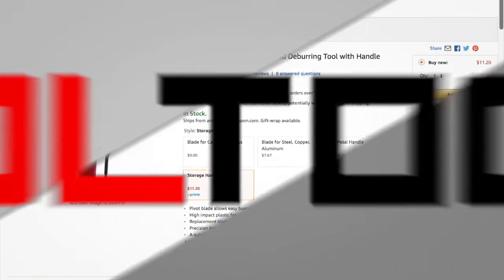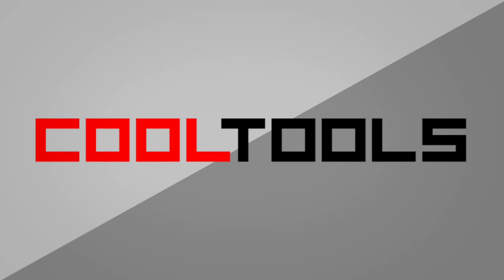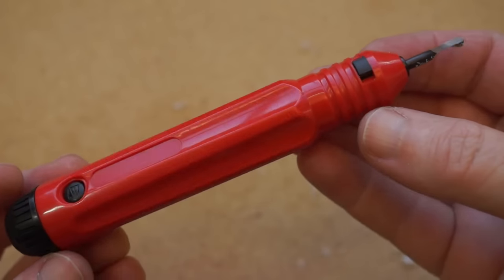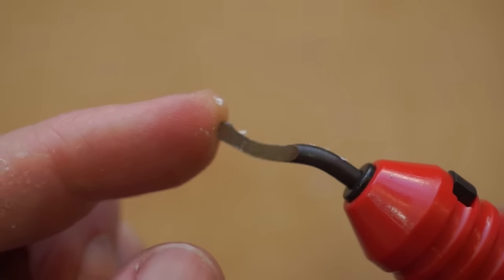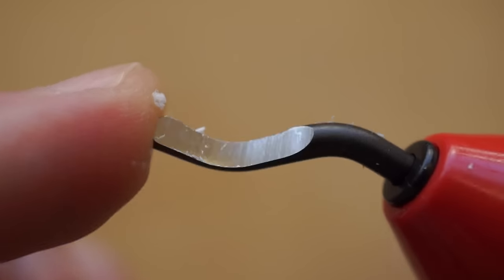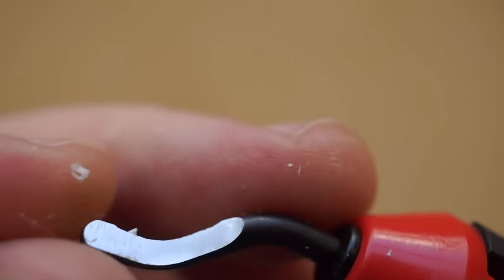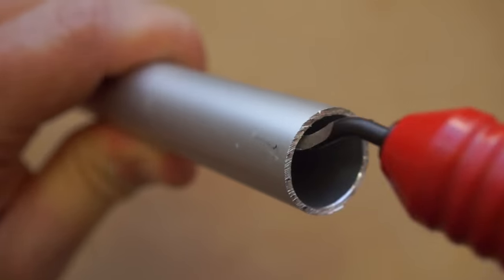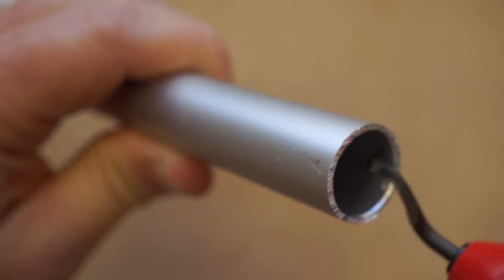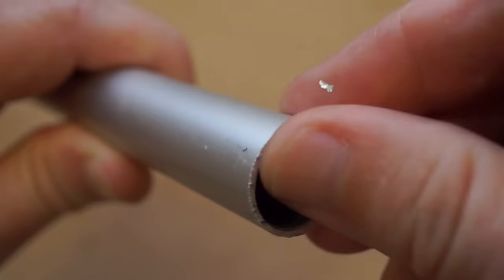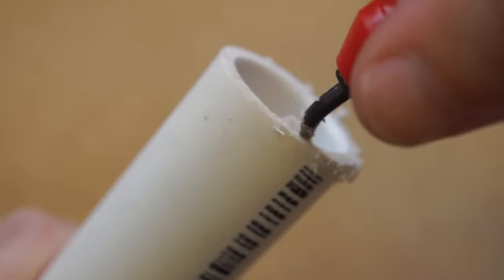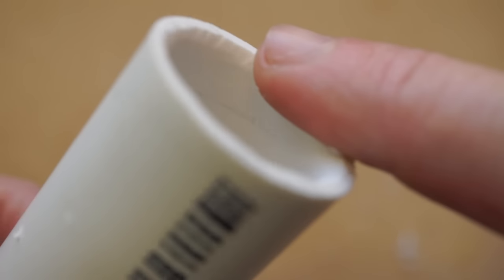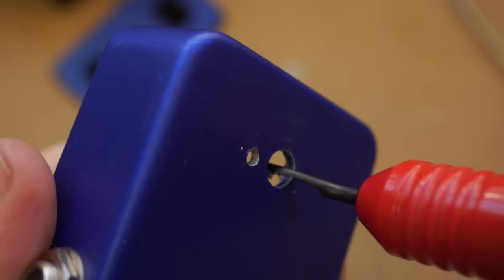Next up, a swivel head deburring tool. There are a few different types of deburring tools. This one is a swivel head model made by General Tools. It's essentially a plastic handle that holds a curved metal blade perfect for smoothing out any sharp edges left behind from cutting metal or plastic. It's a quick tool to use, it's sharp and doesn't take a lot of force, it's commonly used by plumbers to smooth off the rough edges of freshly cut pipe. For me though, I mostly use this for cleaning up holes drilled into metal or plastic project enclosures.